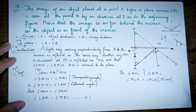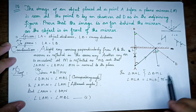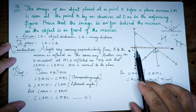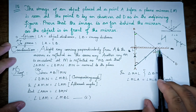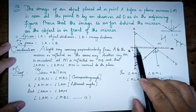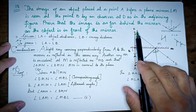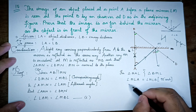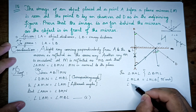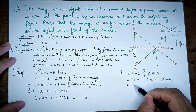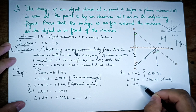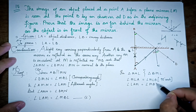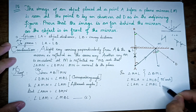In triangle LAM, angle LAM equals angle MBL from equation 1. The angle at L is 90 degrees in both triangles. By AAS congruence, triangle MAL is congruent to triangle MBL.